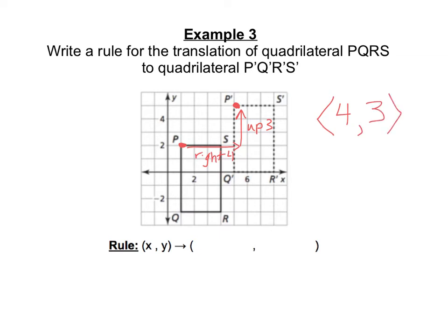If we're going to write the rule for it in translation rule form, (x, y), well 4 is going to be x plus 4, and 3, positive 3, 3 up, would be y plus 3. So you're going to go ahead and type that into your interactive notebook.